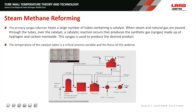We're talking about steam methane reforming and in particular the primary syngas reformer. The primary syngas reformer is heating a significant number of tubes containing a catalyst. When steam and natural gas are passed through the tubes over the catalyst, this catalytic reaction produces our synthetic gas made up of hydrogen and carbon monoxide. That syngas is then used to produce our desired product. The temperature of those catalyst tubes is highly critical and that's what we're focusing on.